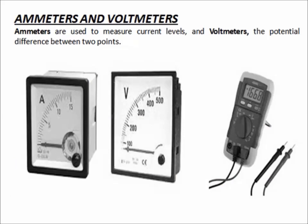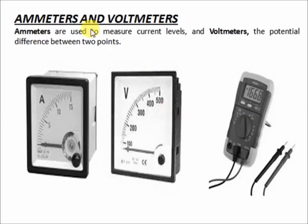The next topic is ammeter and voltmeter. Ammeters are used to measure current levels, and voltmeters measure the potential difference between two points. A multimeter can measure both current and voltage. I guess that's it — I hope you learned a lot. See you again for another tutorial. Until next time, bye-bye.